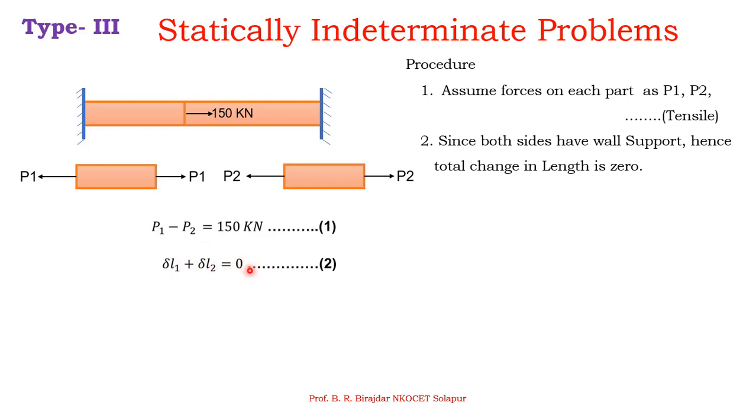Now we'll apply the basic equation: delta L equals PL upon AE. So P1·L1 upon A1·E1 of the first body, plus delta L2: P2·L2 divided by A2·E2. We know the length, cross-sectional area, and Young's modulus of the first body. Similarly, we know these parameters for the second body. If we put all these values, we get the equation: P1 equals something in terms of P2.